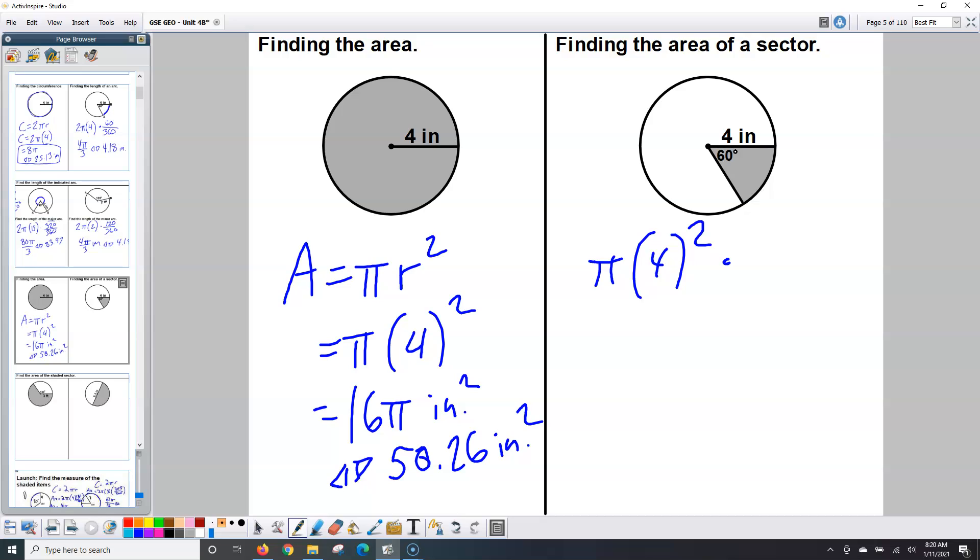But what I just wrote is the area of the whole circle. I don't want the whole circle, I want a fraction of the circle, so we're going to write another fraction. The whole circle will be 360 degrees, and once again I only want 60 degrees of that. When I punch that in my calculator I get 8π over 3 square inches, or you could push your magic arrows and get 8.37 square inches.